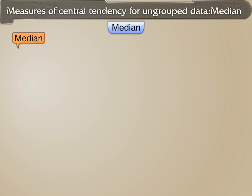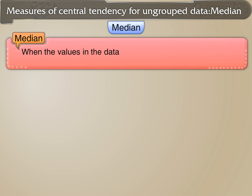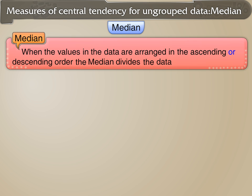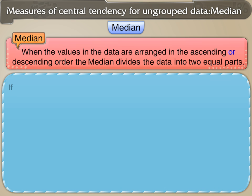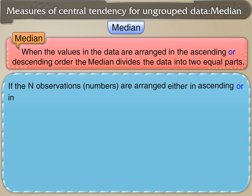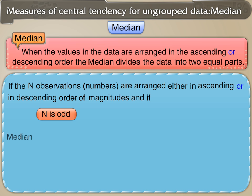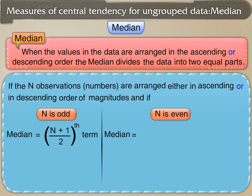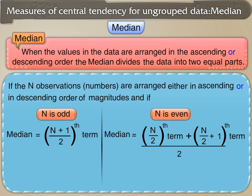Median: When the values in the data are arranged in ascending or descending order, the median divides the data into two equal parts. If n observations are arranged in order and n is odd, the median is the (n+1)/2 th term. If n is even, the median is the arithmetic mean of the two middle observations, i.e., the mean of the (n/2)th and (n/2 + 1)th terms.